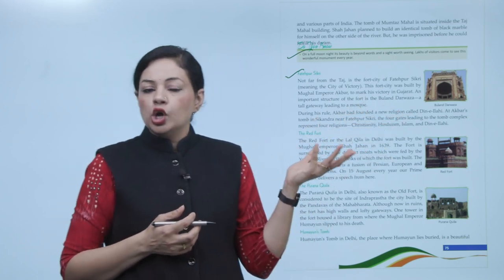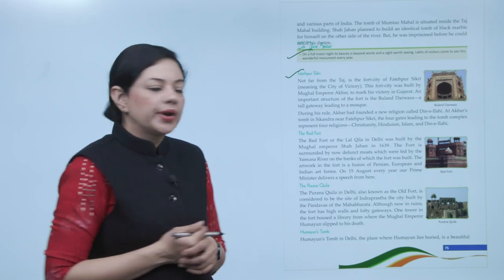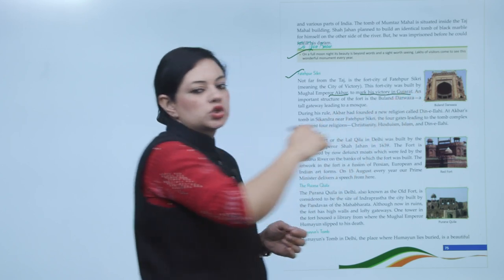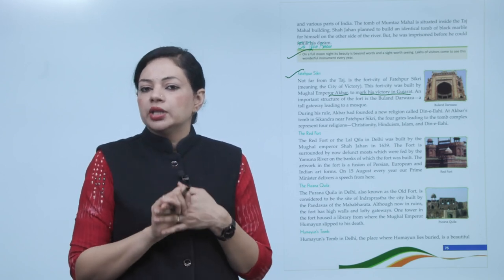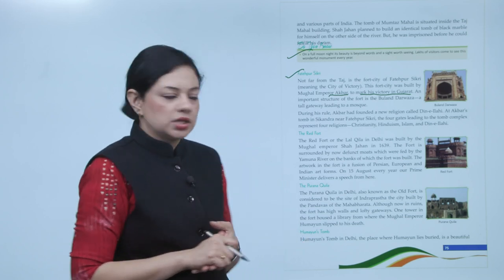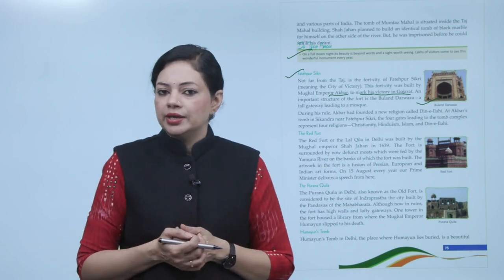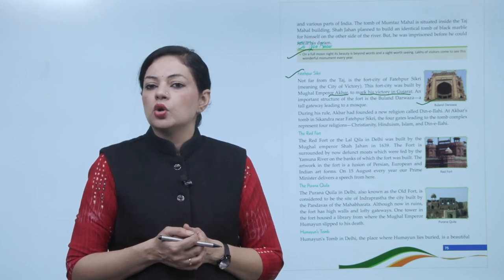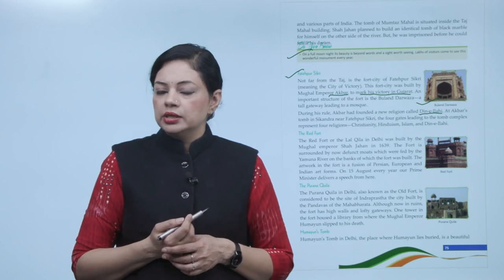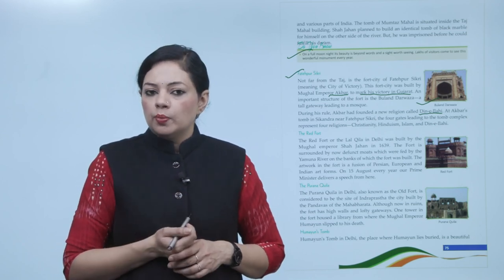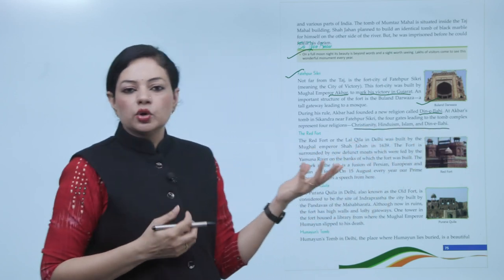Second building is Fatehpur Sikri. Fatehpur Sikri is a city not far from the Taj — the fort city of Fatehpur Sikri meaning the city of victory. This fort city was built by Mughal Emperor Akbar to mark his victory in Gujarat. Jab Gujarat mein jita tha Akbar, us victory ki khushi mein yeh Fatehpur Sikri banai thi. An important structure of the fort is the Buland Darwaja, a tall gateway leading to a mosque. During his rule, Akbar had founded a new religion called Deen-e-Elahi. At Akbar's tomb in Sikandra near Fatehpur Sikri, the four gates leading to the tomb complex represent four religions: Christianity, Hinduism, Islam and Deen-e-Elahi.